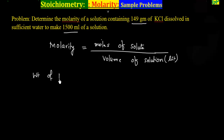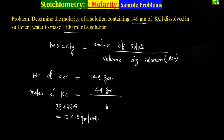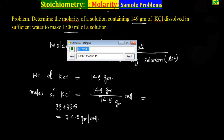First, the weight of KCl — KCl is our solute — is given as 149 grams. So moles of KCl equals weight divided by molecular weight: 149 grams divided by (39 + 35.5) = 74.5 grams per mole. So 149 divided by 74.5 is exactly 2 moles.